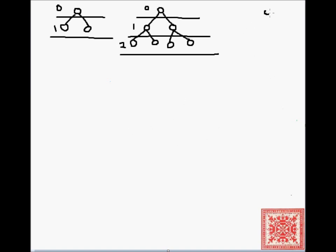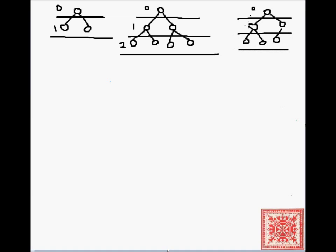Just for the sake of completeness — to make a pun of it — let's draw a binary tree which is not complete. Here's a binary tree which is not complete because it has one node on level 0, two nodes on level 1, but the rightmost possible position on level 2 is not filled.